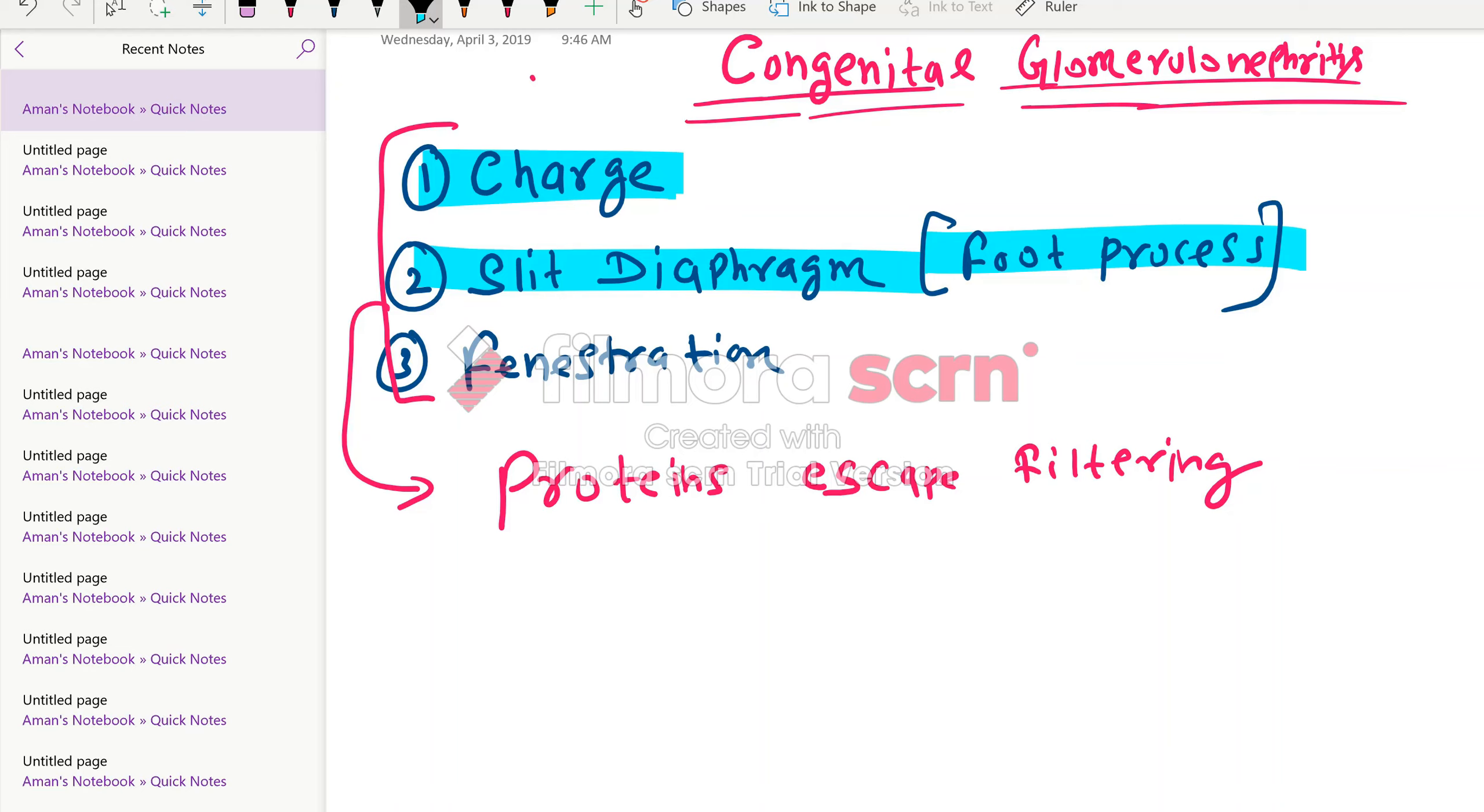Fenestration means these are small gaps. These small gaps will not allow bigger molecules to pass. The most significant reason is slit diaphragm.